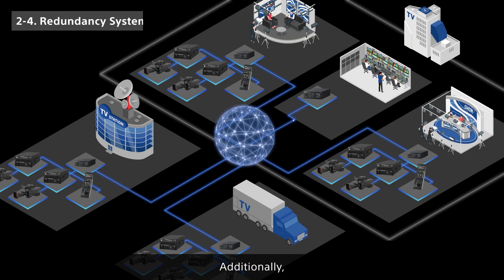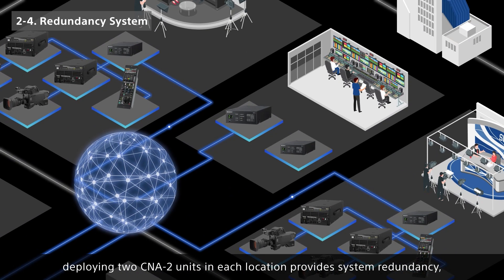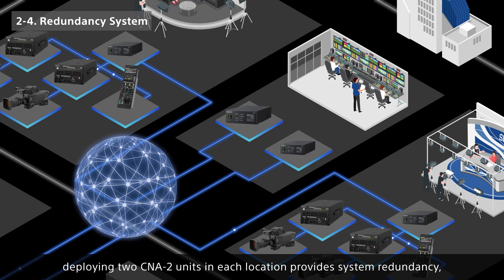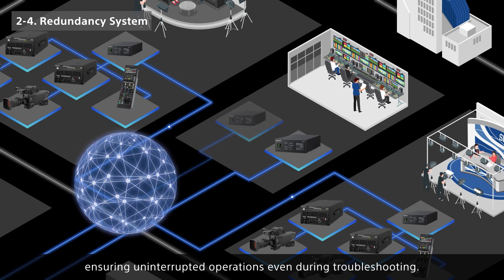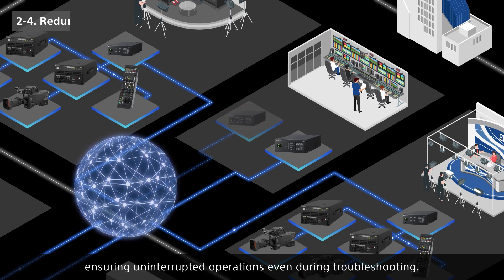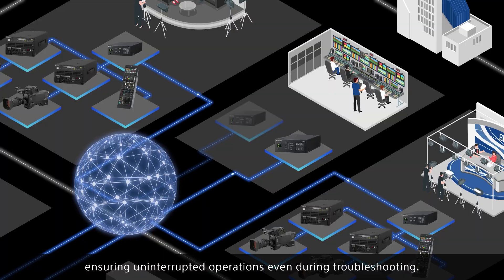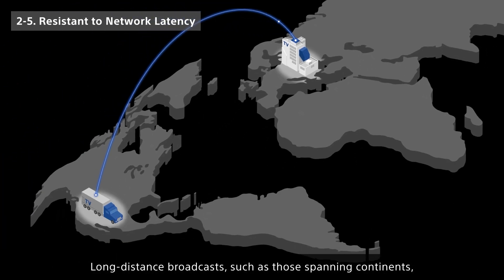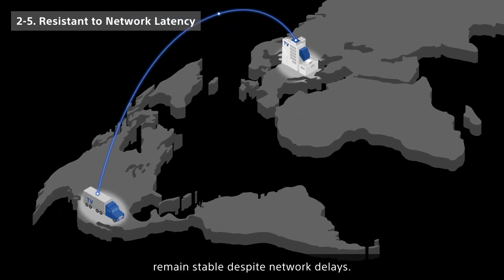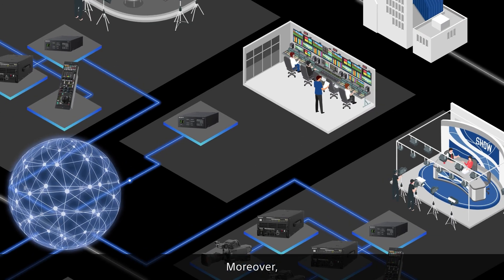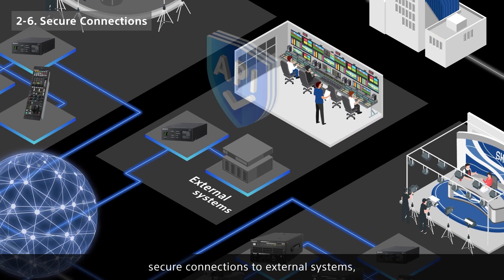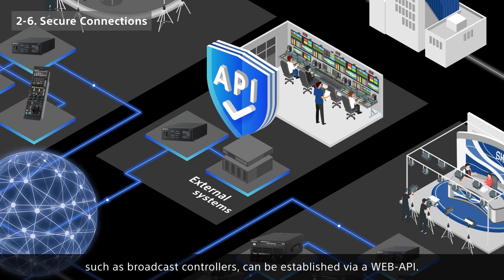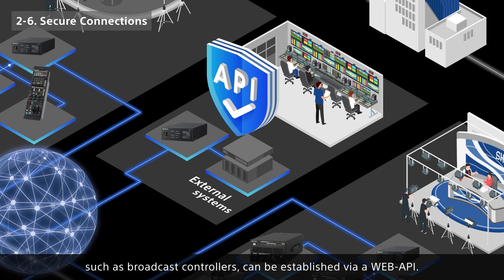Additionally, deploying two CNA2 units in each location provides system redundancy, ensuring uninterrupted operations even during troubleshooting. Long-distance broadcasts, such as those spanning continents, remain stable despite network delays. Moreover, secure connections to external systems such as broadcast controllers can be established via a web API.